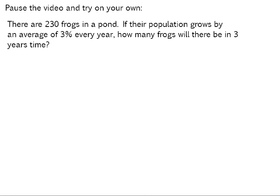So if we substitute into our formula, our final value, our end amount, we don't know. So the amount at the end of the life of the 3 years we are trying to find out. We know that we're starting with 230 frogs and they are growing by 3% every year. So 3% as a decimal is 0.03 and the number of years that we are interested in is for 3 years.